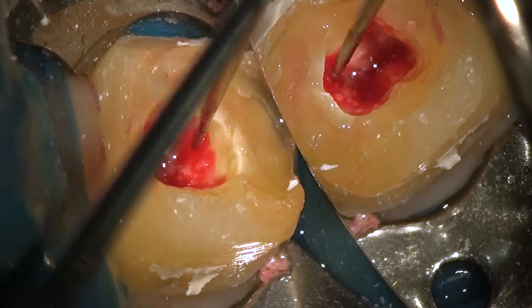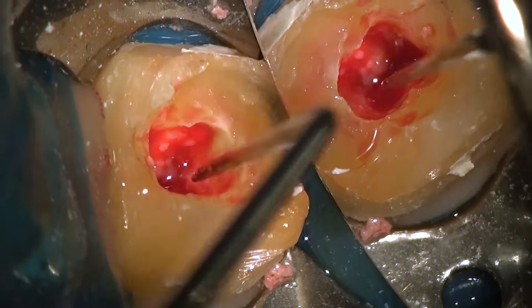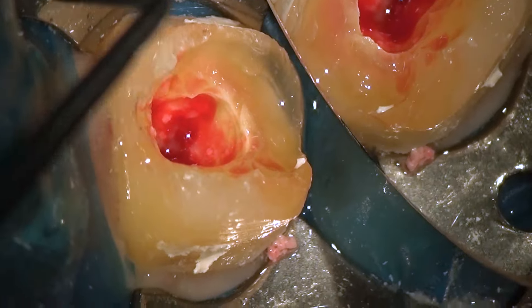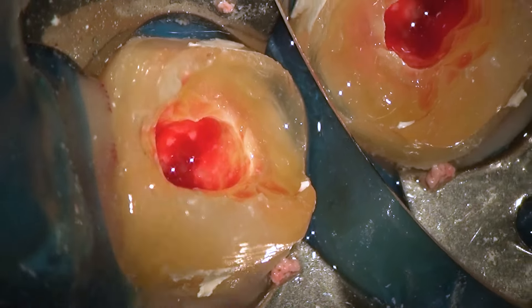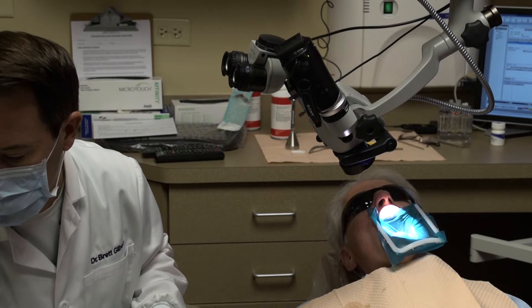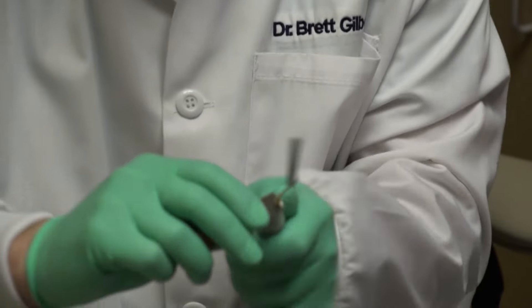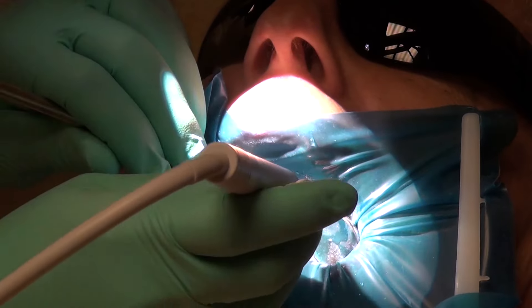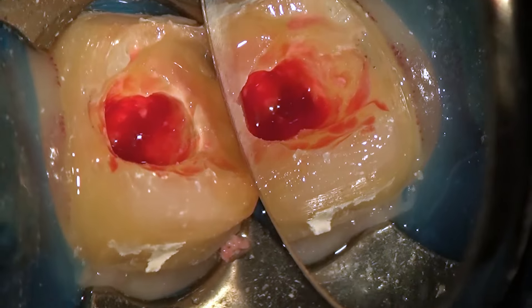A very important tool in your bag is going to be the ultrasonic tips, and this is a great time to introduce them. At this point we still have some pulp horn to remove, and using a bur is one way, but the ultrasonic is a really safe way and you can see exactly what you're doing. So we're going to use my trusty BUC-1 tip. Just a little vibration, Frank — it has a little different sound to it. Without water spray you can see just how wonderful the visibility is.